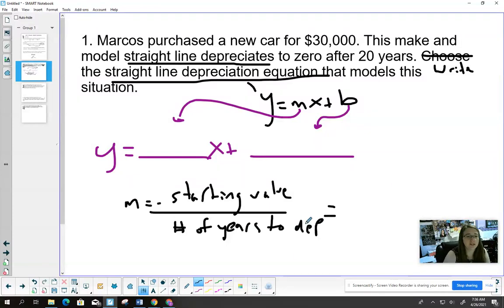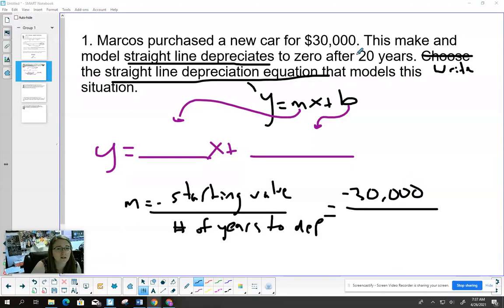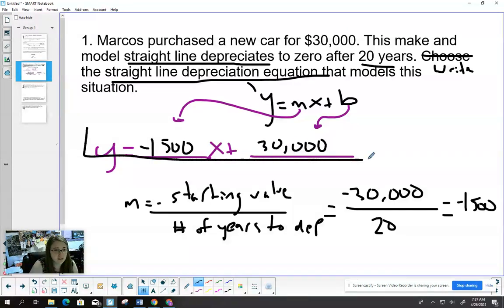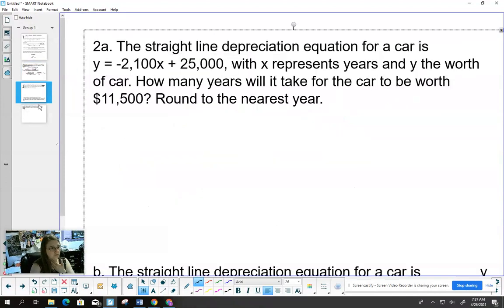Starting value is negative $30,000. You just tack the negative on yourself. It's 20 years to depreciate. So you've got 30,000 divided by 20. You should have gotten negative 1,500 - that's our M. Then we go back to the formula sheet for B. B is the starting value of the car. What's going to go in for B? 30,000. And that's your answer: Y = -1,500X + 30,000.